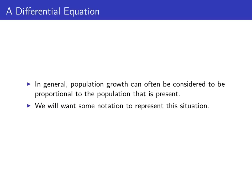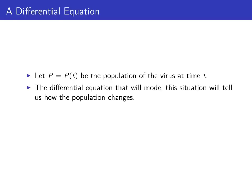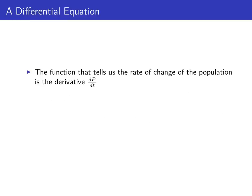To make this more clear from a mathematical perspective, we'll want some notation. Let p equal p of t be the population of the virus at time t, so p is a function of time. The differential equation we're going to build to model this population growth will tell us how the population changes over time, so we're going to need a function that tells us how the population changes. Pause the video for a moment, write down such a function, and then resume when you're ready. The function that tells us the rate of change is the derivative dp/dt.